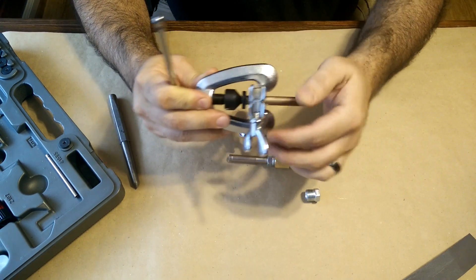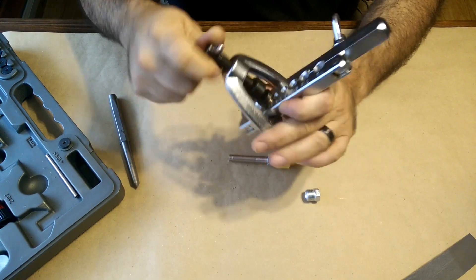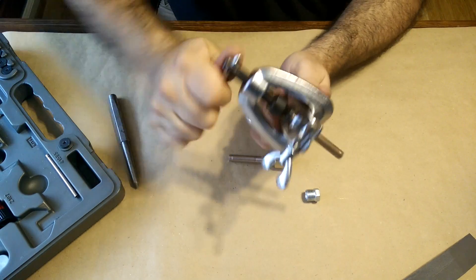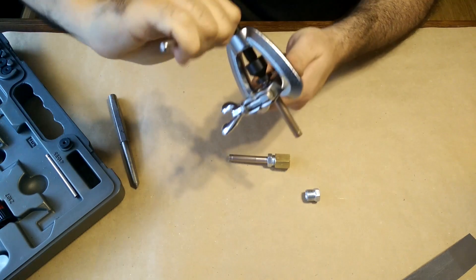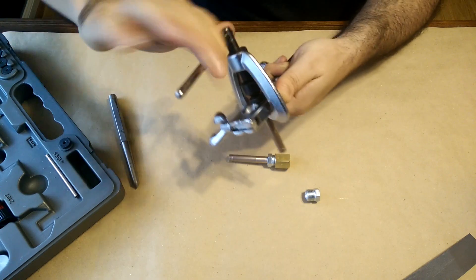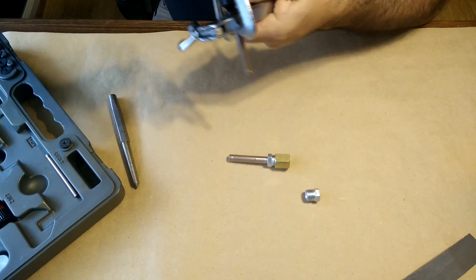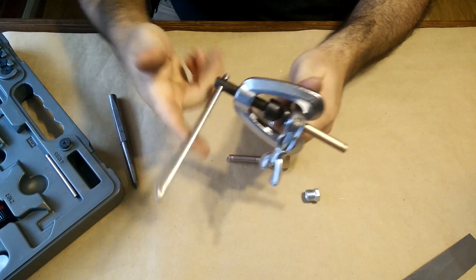And then you simply just put some muscle into it and start cranking it down. And I love using this Nikop tubing because it is so easy to flare both single and double. And when you get to the end it'll get pretty snug, and then you'll want to back it off.